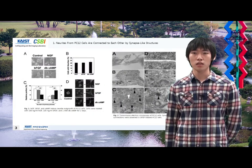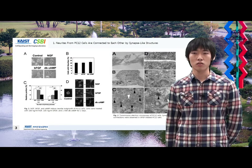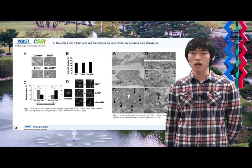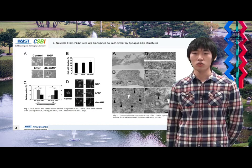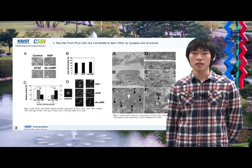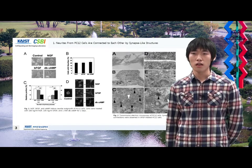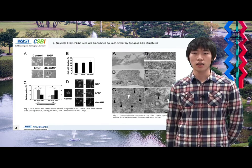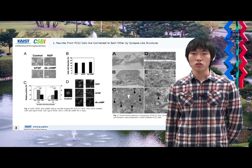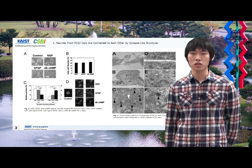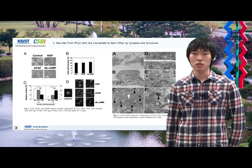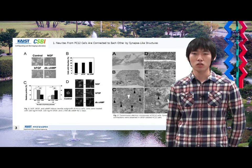As PC12 cells were incubated with NGF, bFGF (basic fibroblast growth factor), and cAMP for two days, neurite outgrowth occurred, and cAMP induced more neurites with shorter length. Researchers observed by SEM (scanning electron microscopy) that some terminals of neurites showed button-like morphology and were connected to the axes of neurites. Using TEM (transmission electron microscopy), these synapse-like structures were observed in PC12 cells treated with bFGF, and many dense core vesicles were shown.